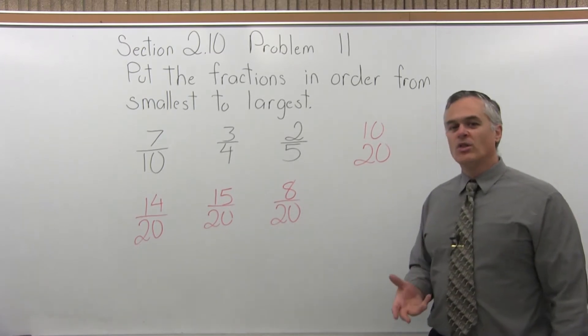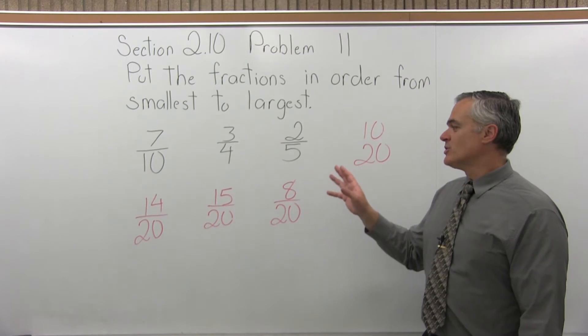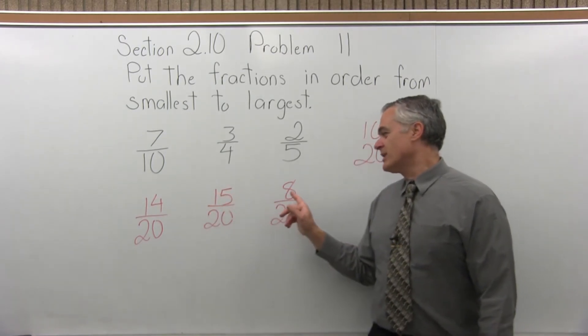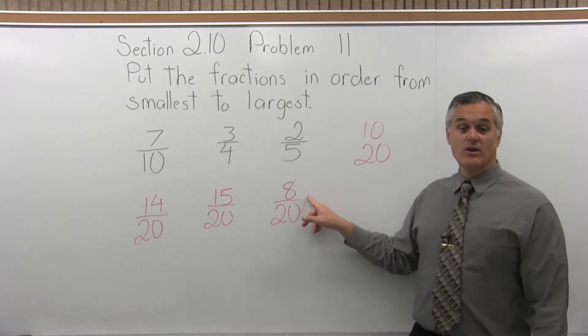Now I have all the fractions with the same denominator, in this case 20. And my choice is 14 over 20, 15 over 20, 8 over 20. I want to put the smallest one first. That's clearly 8 over 20.